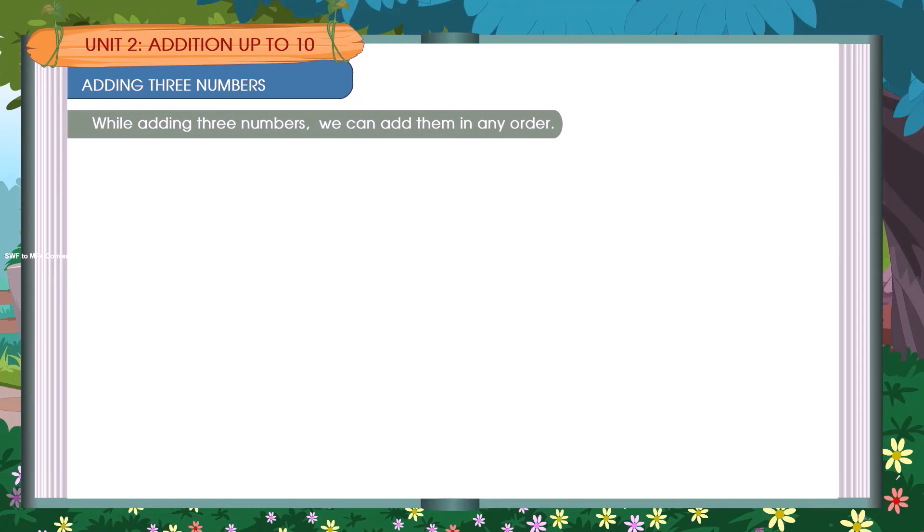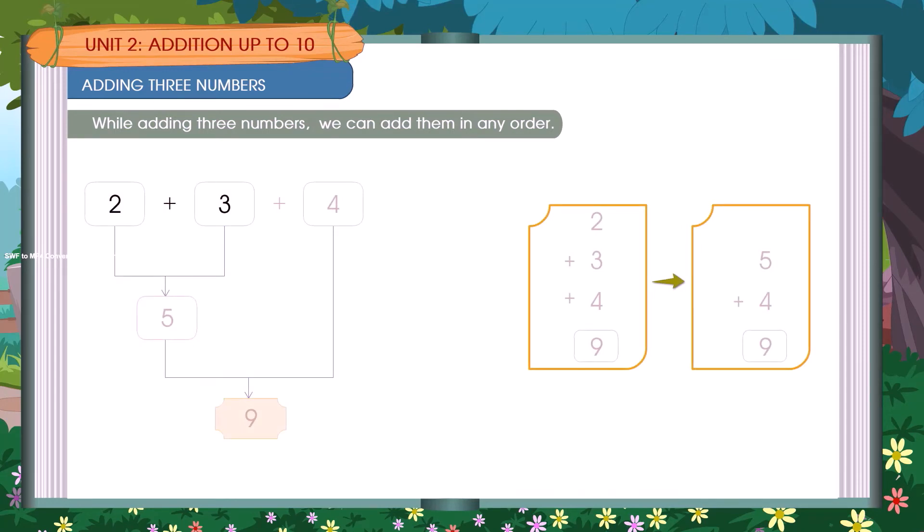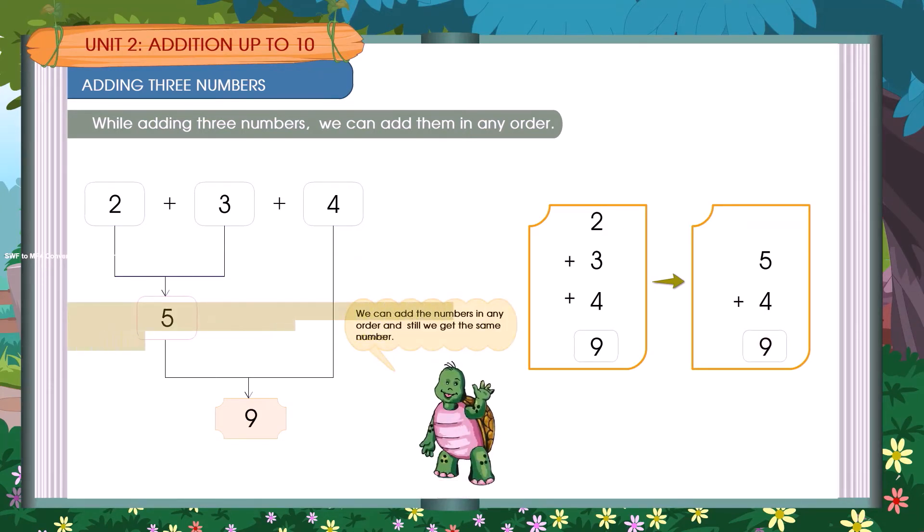Adding 3 numbers. While adding 3 numbers, we can add them in any order. 2 plus 3 is equal to 5. 5 plus 4 is equal to 9. We can add the numbers in any order and still we get the same number.